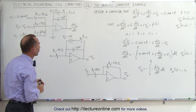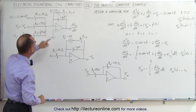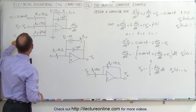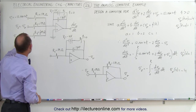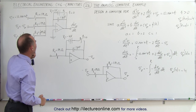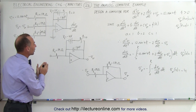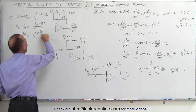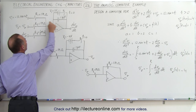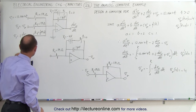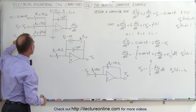Since the dV/dt term requires a coefficient of two, we make that resistor one half the value of the other two resistors, so the time constant R times C for that branch is half as large. For R1 times C and R2 times C, the products are twice as large as R3 times C. This results in the coefficient being equal to two.